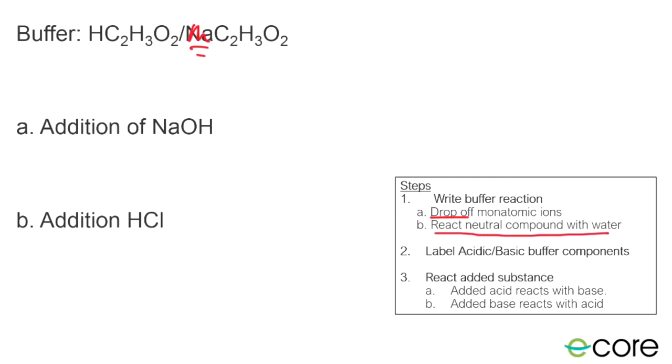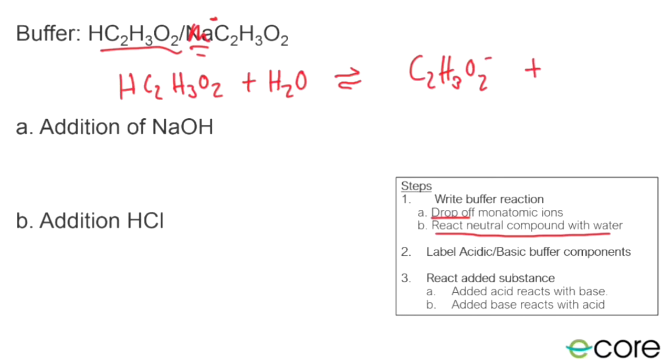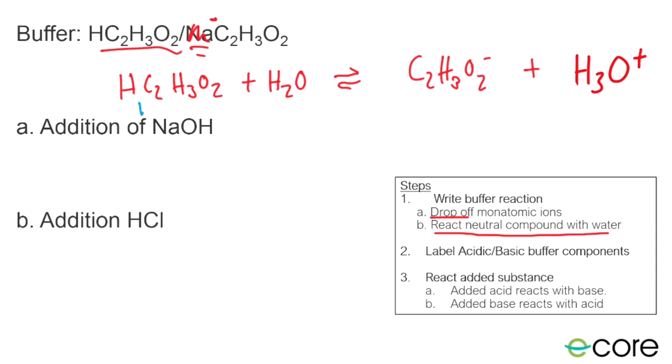Then we're going to react what remains as neutral with water. So our acetate ion is not neutral, it has a negative charge once that sodium ion comes off. So we're just going to react the acetic acid. So HC2H3O2 reacts with water. And when that happens, because our acetic acid is an acid, it's going to donate its hydrogen ion over to water.